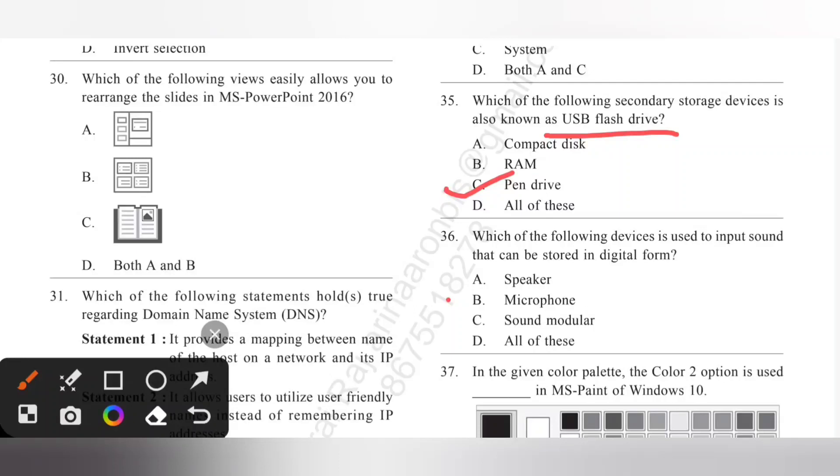Question 36: Which of the following devices is used to input sound that can be stored in digital form? So, microphone. Microphone is a device which is used to input sound which can be stored in digital form. So, option D is the correct answer.